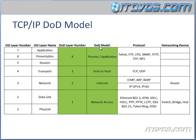In the DOD model, routers function at the internet layer, and switches, hubs, and bridges function at the network access layer.